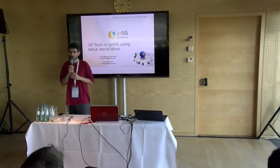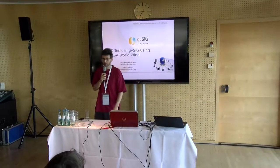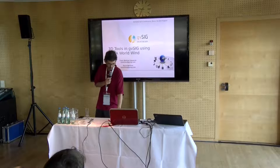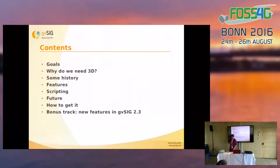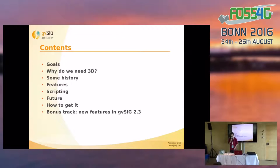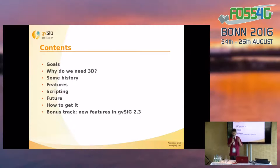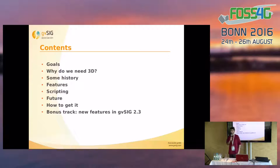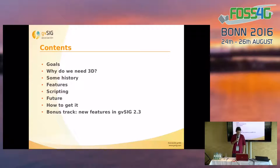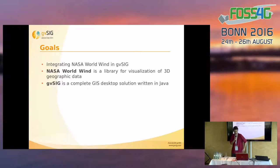We are going to present the integration of NASA WorldWind in gvSIG, in the last version of gvSIG. I will first explain the goals of the integration and why it's important to have 3D in GIS, and then some history of 3D in gvSIG. Then I will introduce what we are able to do so far and what we are working on, and then how to get it and what's new in gvSIG 2.3, which is the last version.